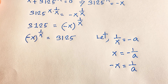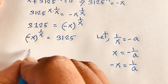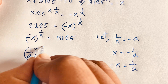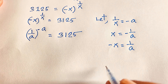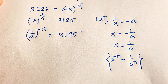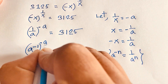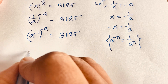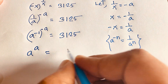Let me introduce a substitution. Let a equal minus x, so 1 over a equals 1 over x. Then the whole expression to the power 1 over x becomes minus a to the power 1 over a, which is a to the power a — because the two negatives make a positive — equal to 3125.